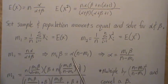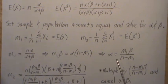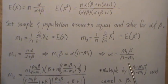And then to solve for alpha, we divide by n minus m1.